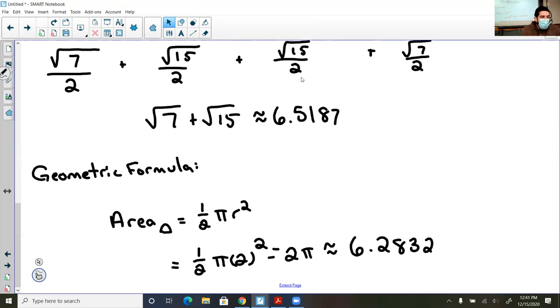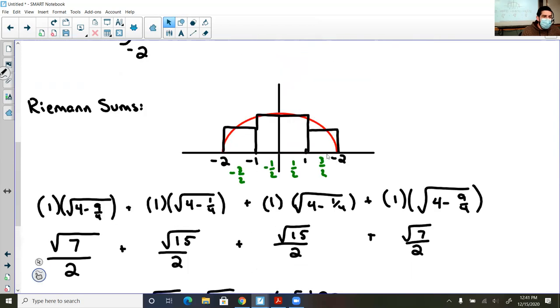And so we can see how close our Riemann sums approximation is to the actual area under the curve. And this is the actual area, or the approximation to the area, because a semicircle would fit perfectly under the semicircle.